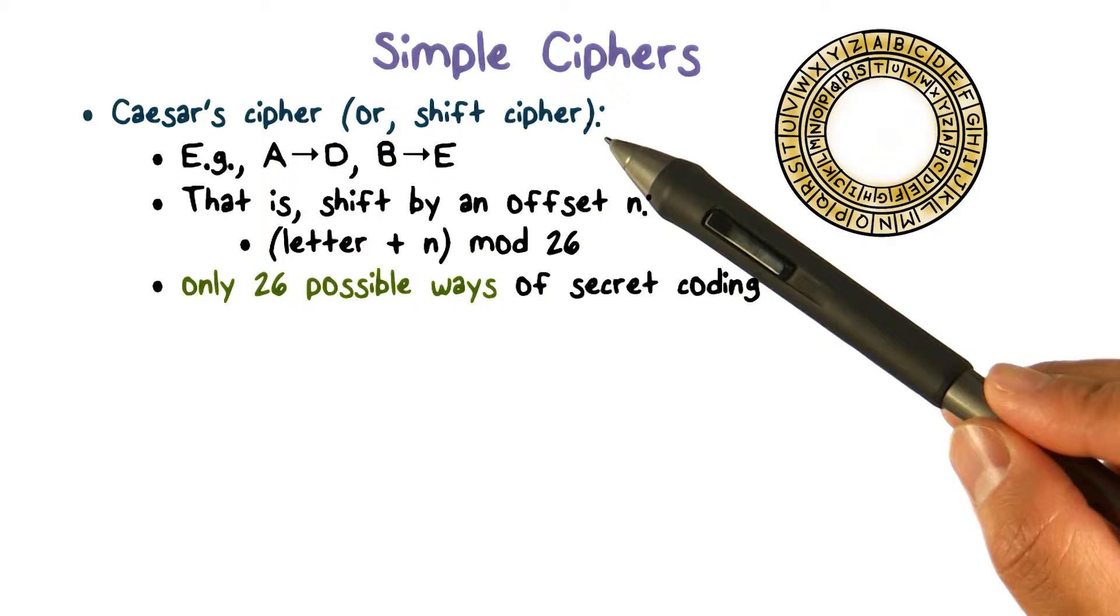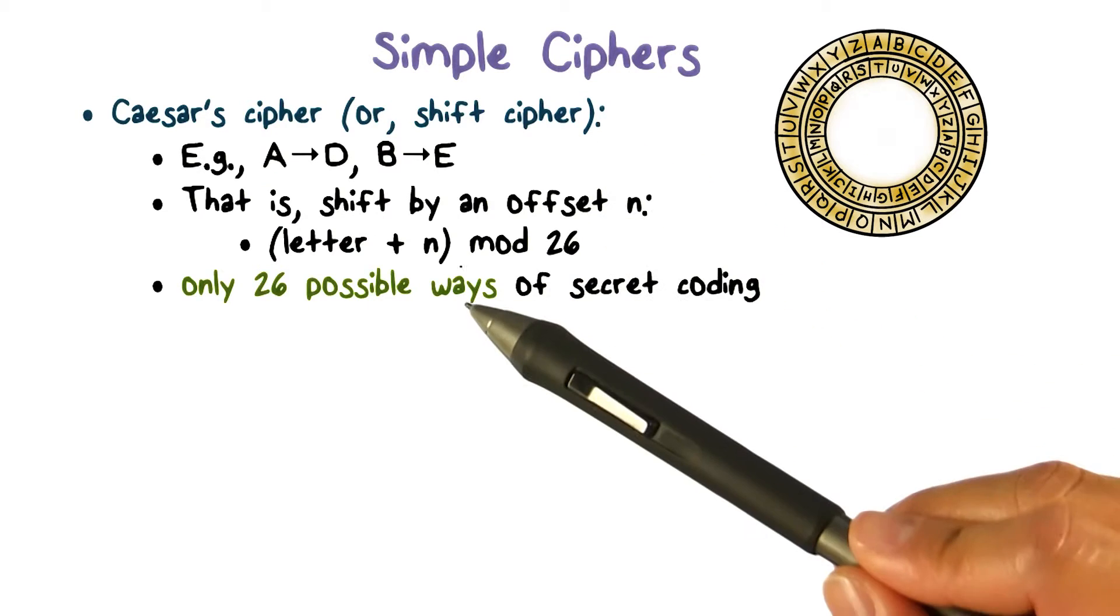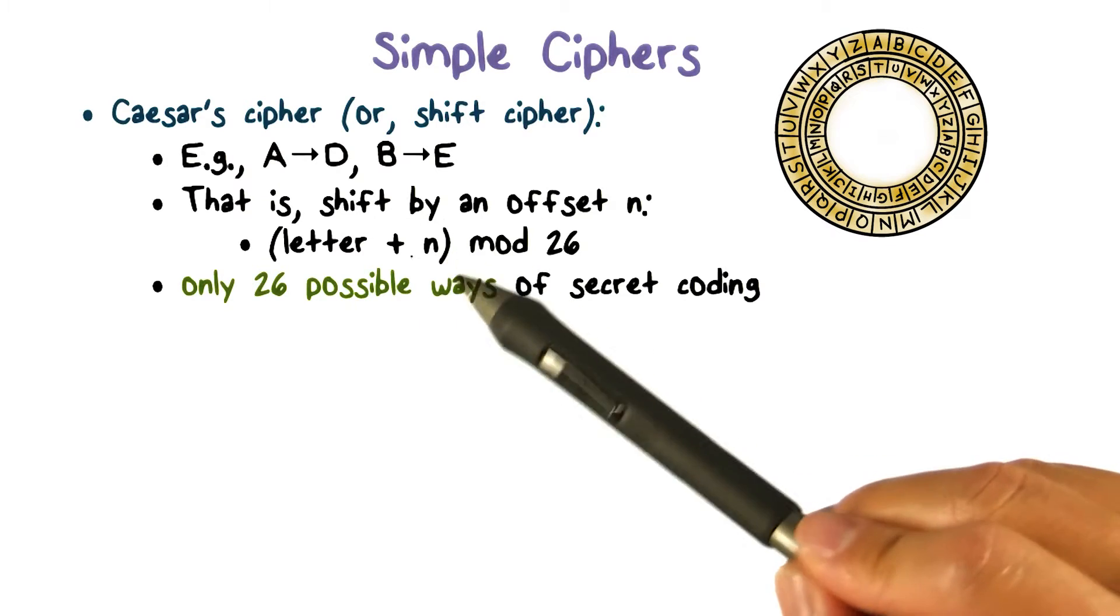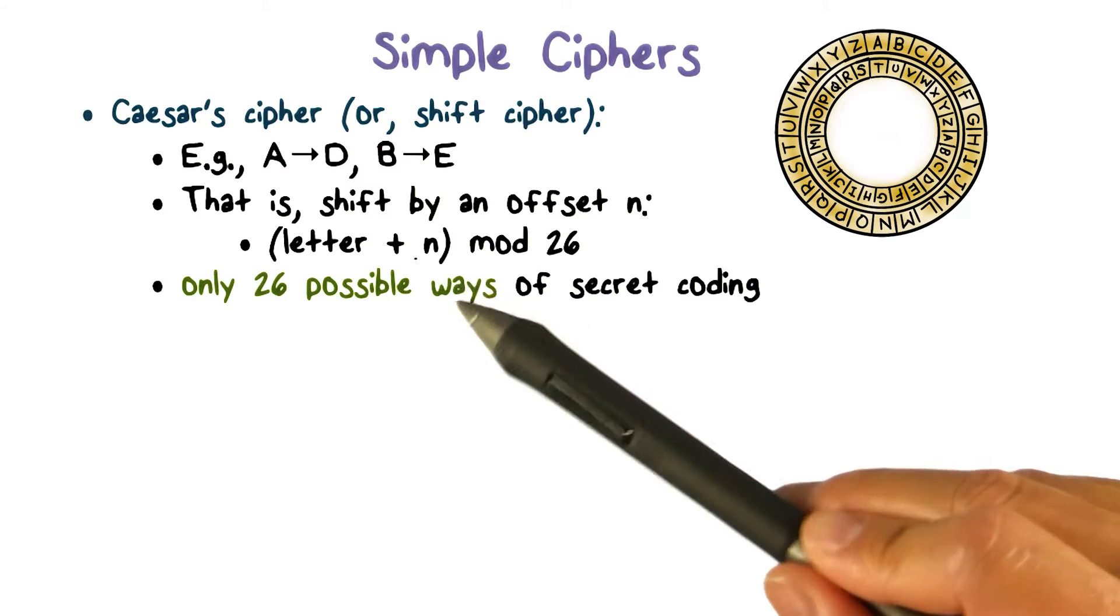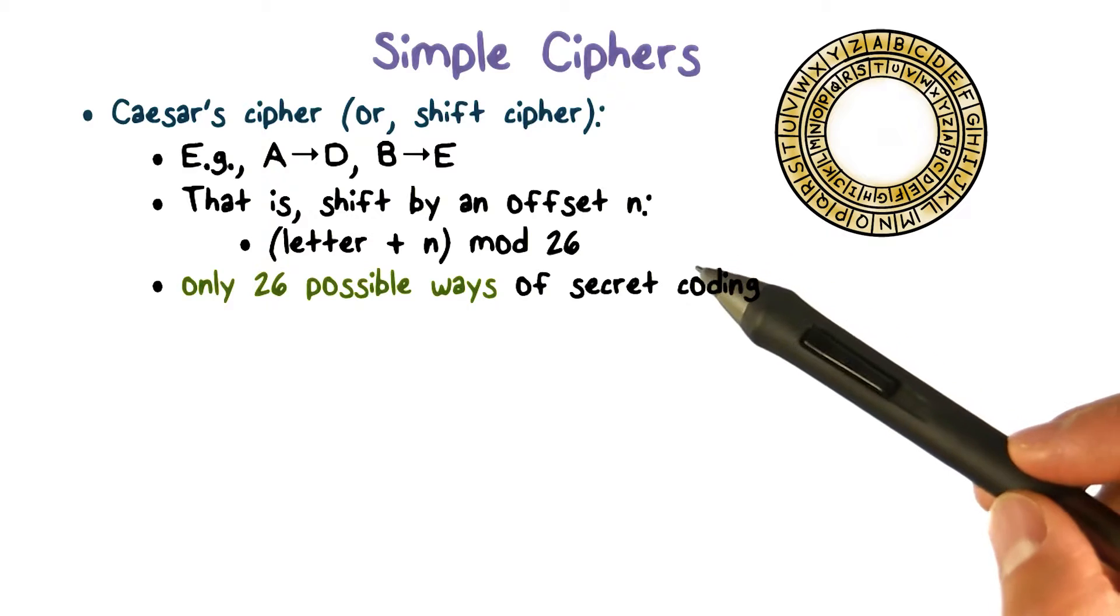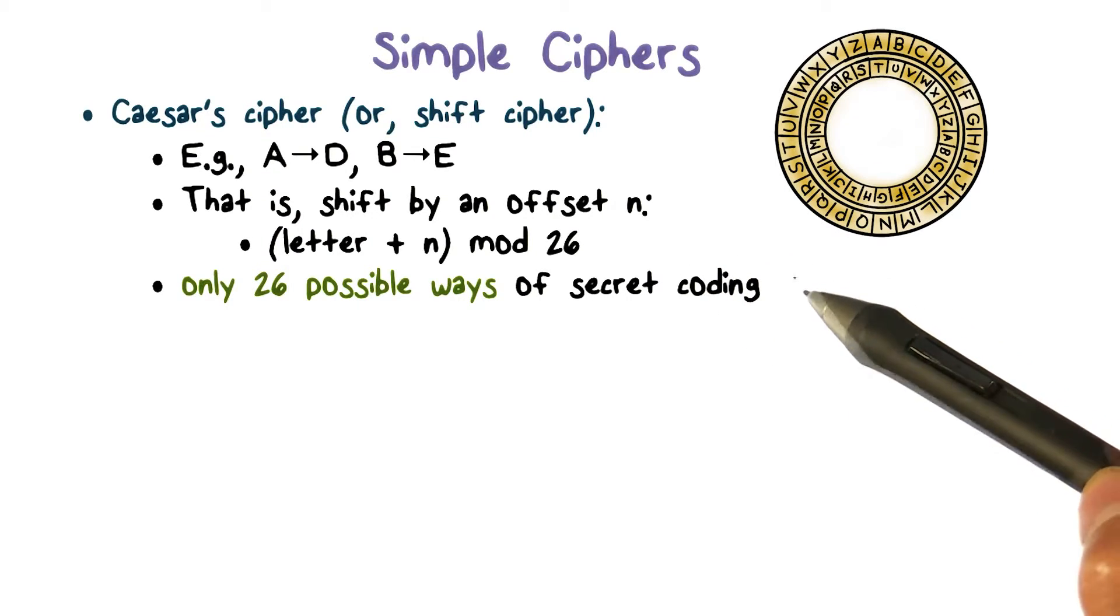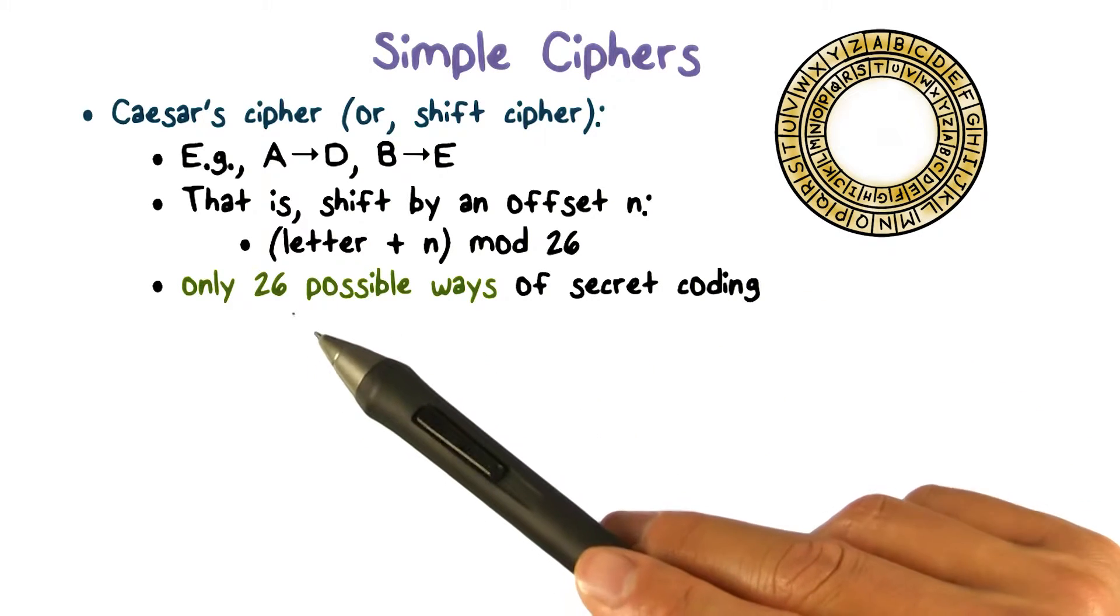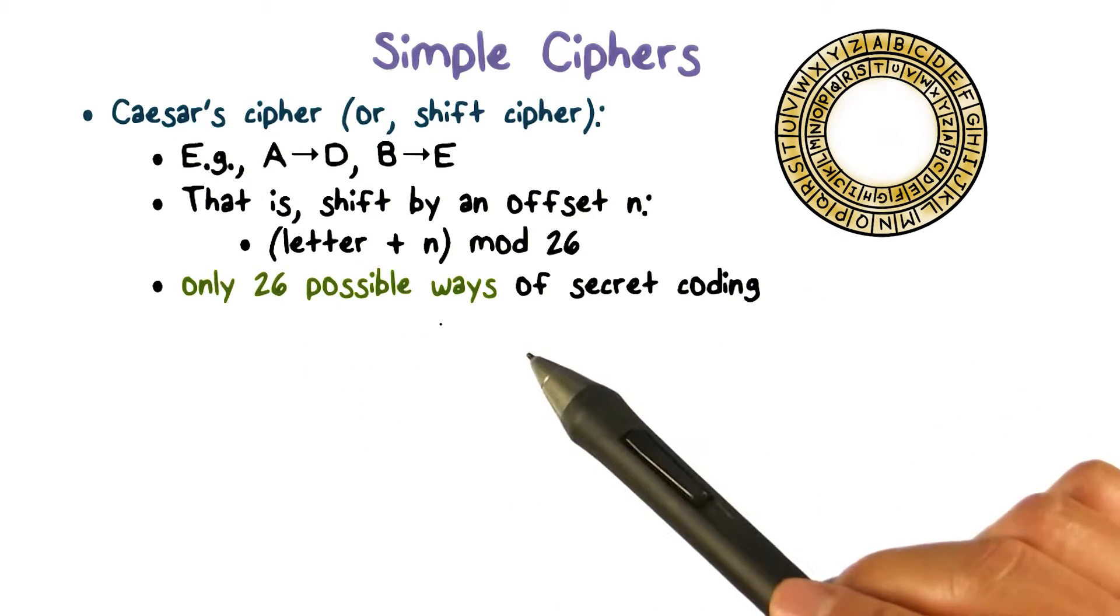Then this encryption scheme or cipher can be represented as the letter, meaning the integer, plus n, the fixed shift amount, mod 26. Here the shift amount n is the secret or the key. And obviously, there are only 26 possible keys. Therefore, it is easy to break Caesar cipher because you only need to try 26 possible keys.